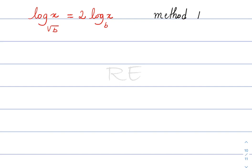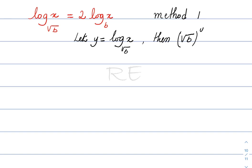Method 1. We're going to let y equal to log base square root of b of x. Then the base, square root of b, raised to y — y is the exponent — is equal to x.